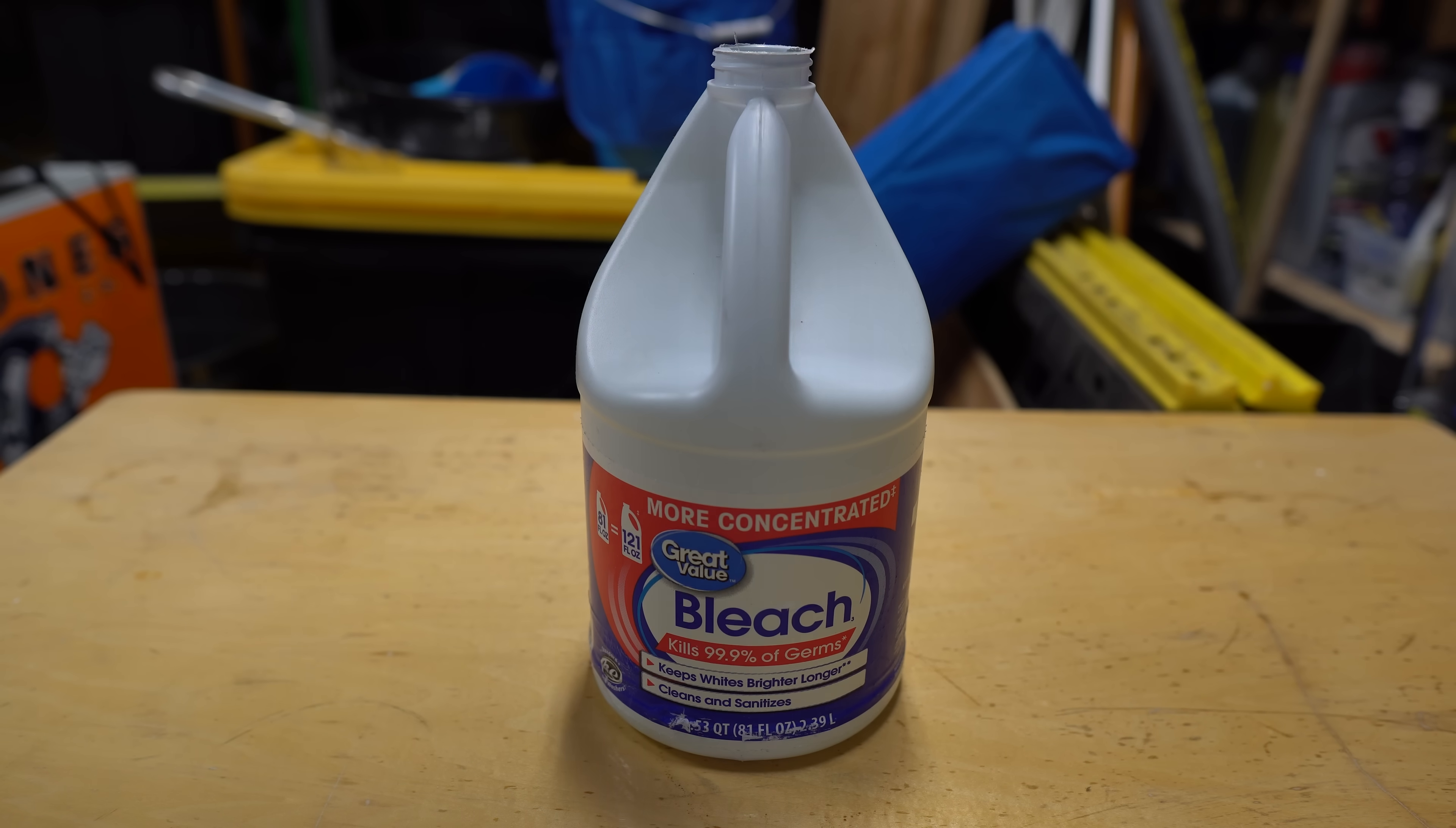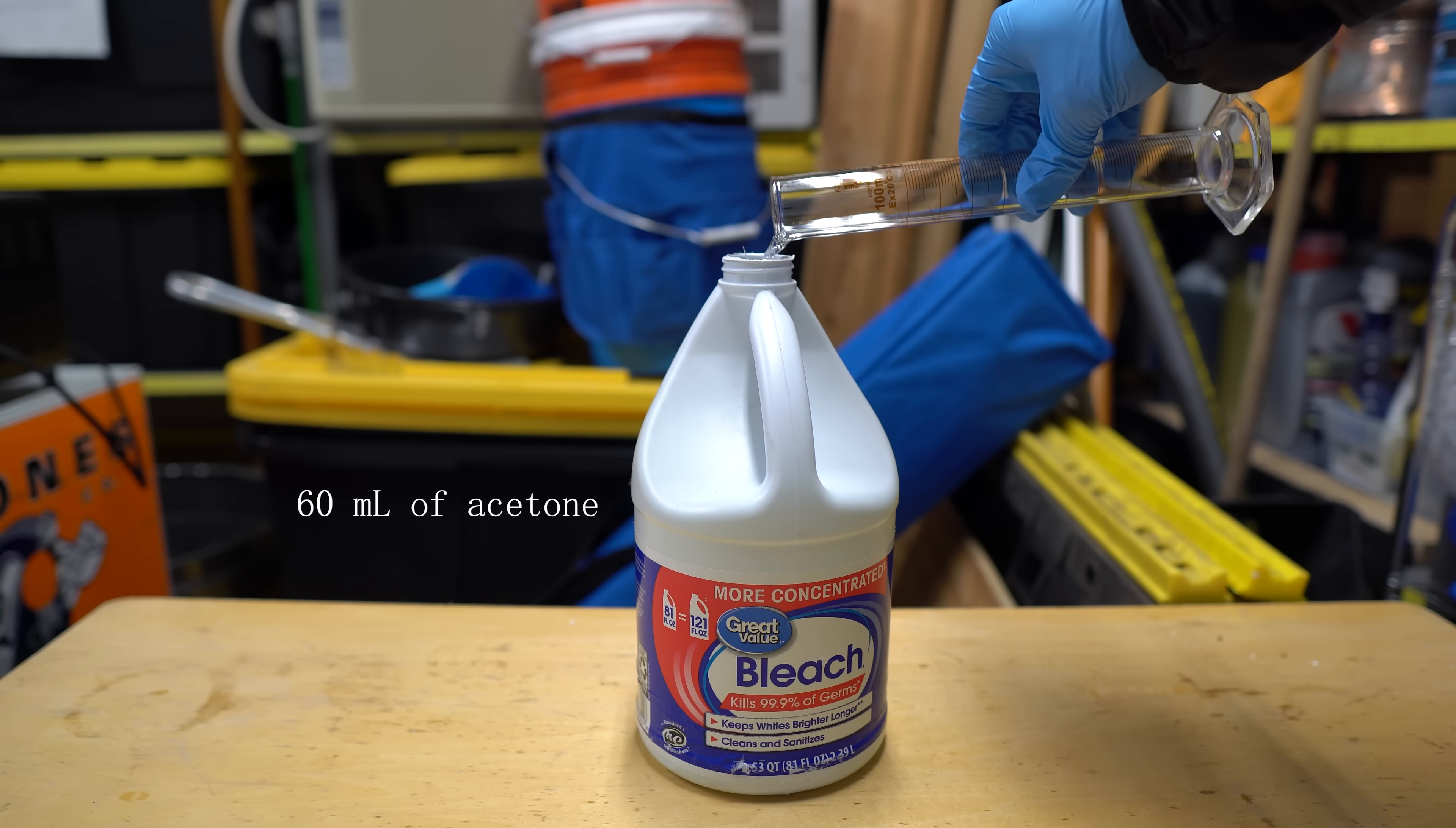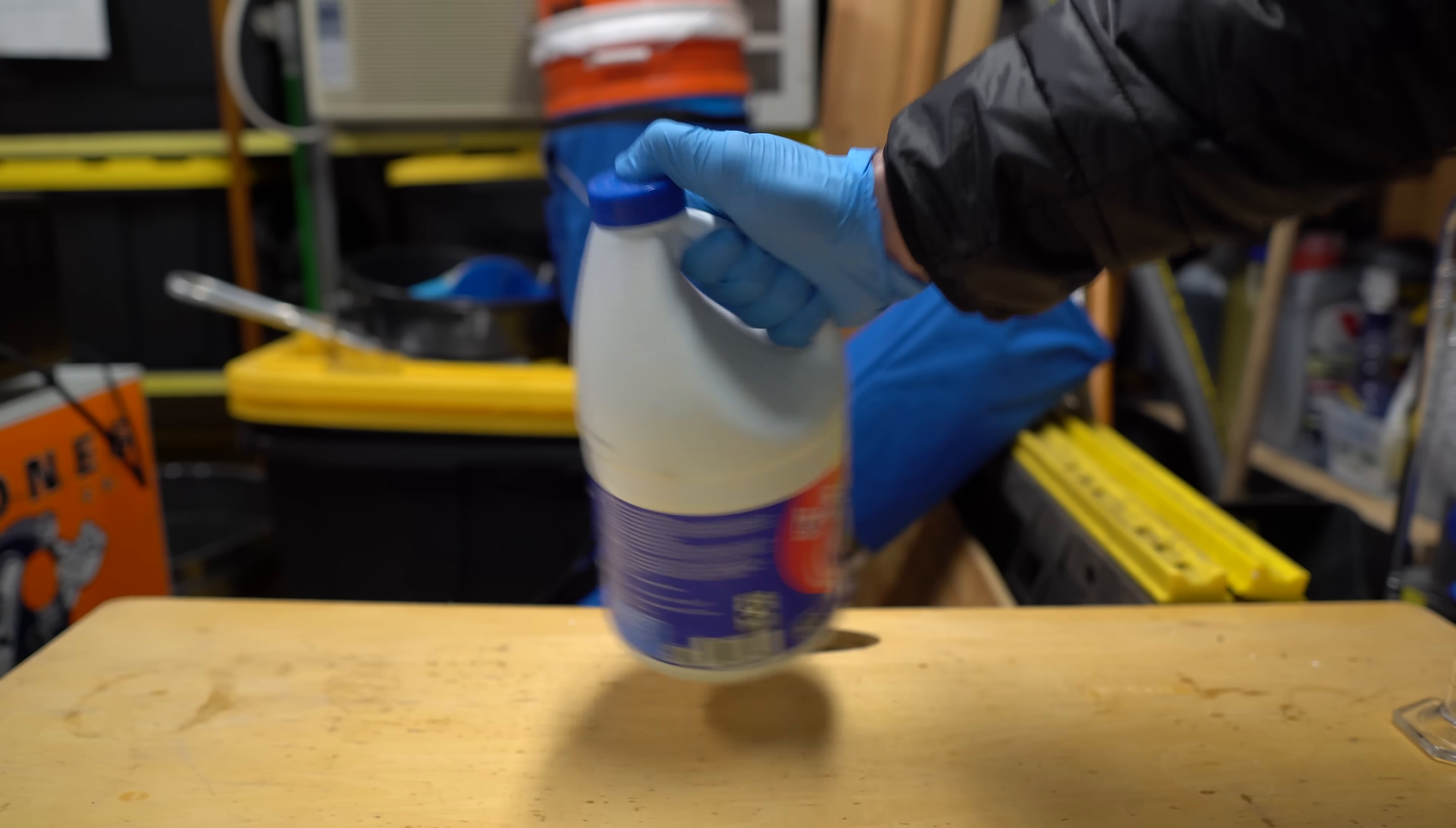We actually had to get a new bleach bottle just because I accidentally froze the other container, so I had to get another brand. I actually used a smaller container, about one-third the size, so I used about one-third the amount of acetone, just because there's about the same concentration of sodium hypochlorite as well. Just like before, all the steps are going to be the same. I'm going to shake it up, make sure everything's mixed together, but this time we're actually going to allow it to react for 12 to 24 hours.